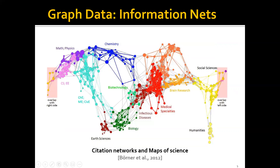Another example is information networks, such as citation networks or the maps of science. You can see these graphs where each node represents one particular paper, and the link between two nodes represents a citation relation between two papers — let's say paper A cites paper B, then there will be a connection between these two nodes.